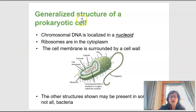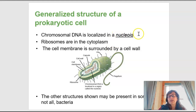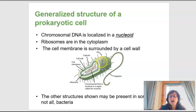Here is a generalized view of a prokaryotic cell — they aren't quite as simple as they first appear. We can see the chromosomal DNA in a loopy form in an area called the nucleoid. Unlike a nucleus, which has a membrane around it, the nucleoid has no membrane — the DNA is just loose in the cytoplasm. We also have ribosomes, the small dots in the interior, as well as a cell membrane surrounded by a wall containing peptidoglycan.